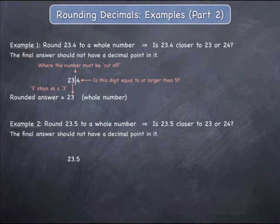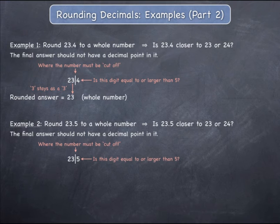As was the case previously, write the starting number and draw a line where the number needs to be cut off, which in this case is at the decimal point itself. Look at the digit immediately after this line and ask yourself: is this digit equal to or larger than 5?